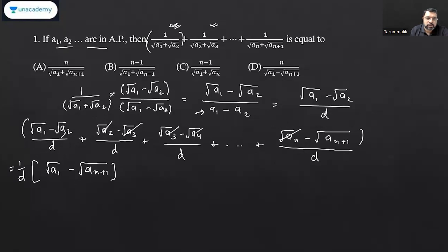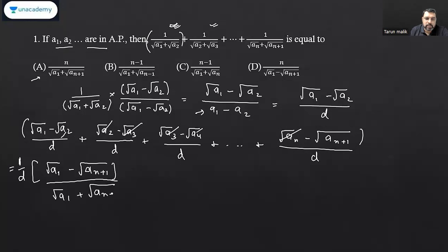This should be the answer, but looking at the options we can see the answer has surds in the denominator. So we need to rationalize again. I will multiply by (√a₁ + √a_{n+1}) in both the numerator and denominator.